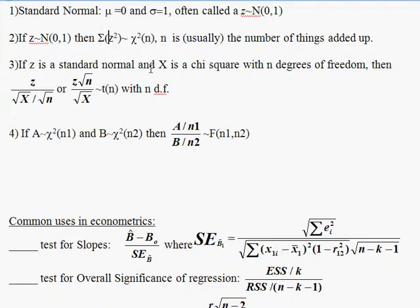To be honest, sometimes in the real world it's not n, it's n minus 1. But it's always going to be related to the number of squared normal things added up — and commonly it'll be n minus 1.